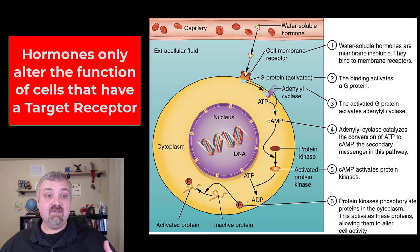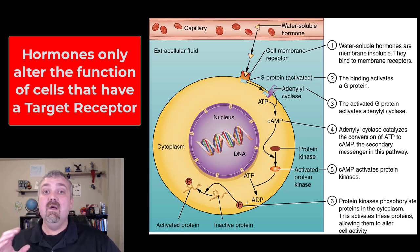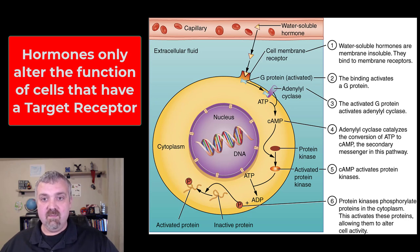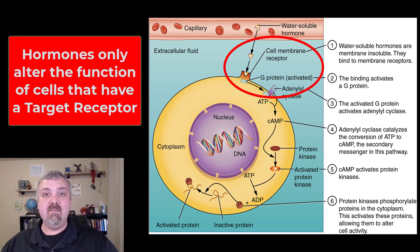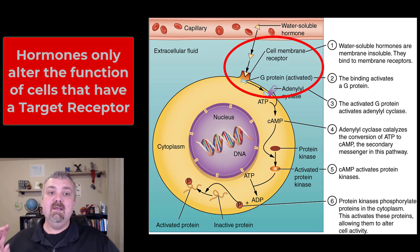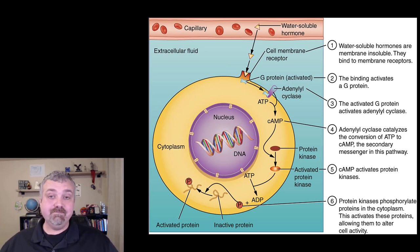So if the thyroid gland dumps thyroid hormone into your bloodstream, it's going to impact every cell that receives blood, but it's only going to actually dock on and have a direct impact on cells that have target receptors for thyroid hormone. So if the hormones are the keys, then target receptors are the locks, and here we see an example of a membrane receptor. If that happens and this cell is going to be impacted by a hormone, what kind of things can we expect to happen?